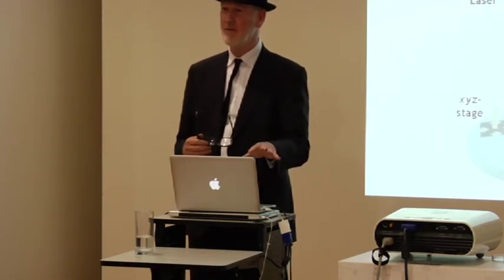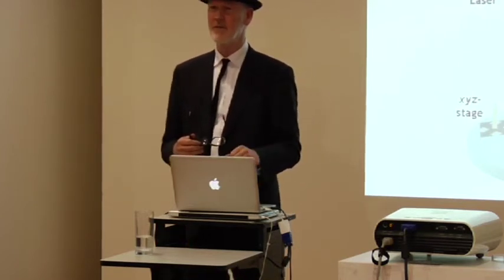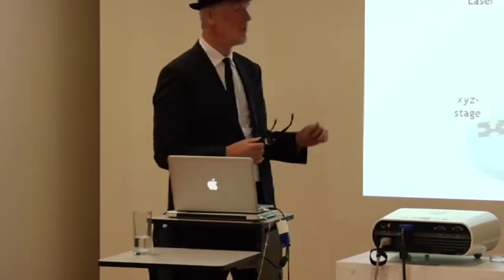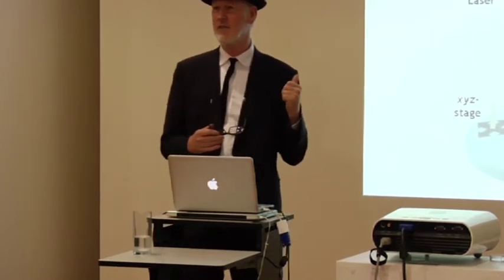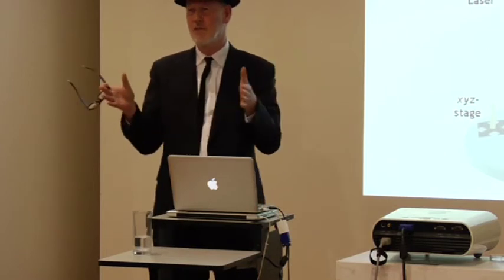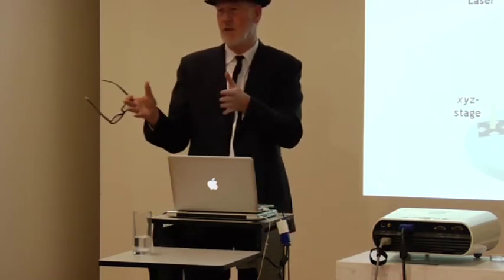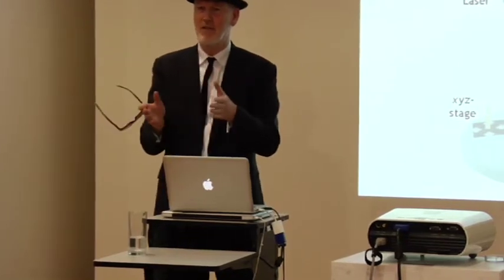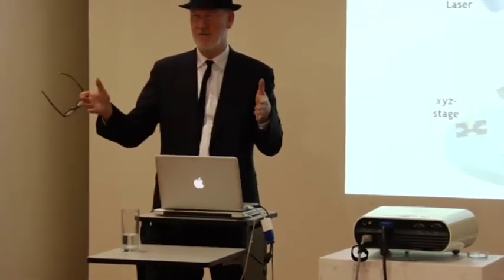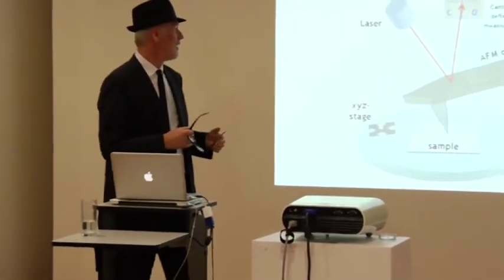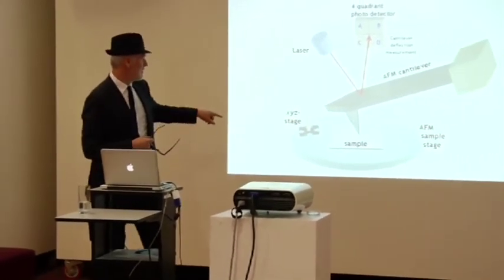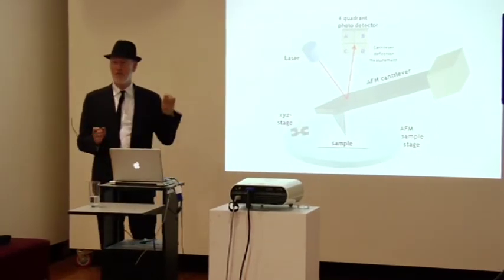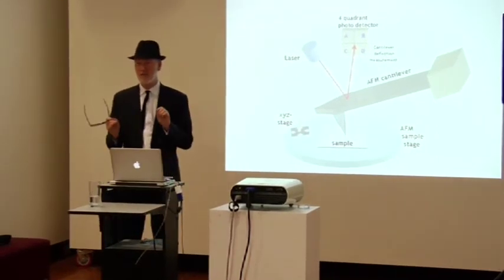This is an AFM, an atomic force microscope, and it works like this because of the spectrum of light. We see between 400 and 700 nanometers. This tip is supposed to be about 10 nanometers, roughly 100 atoms across at the very point. That's how they scan in this context.